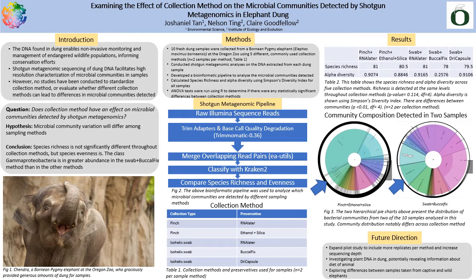As well as logging activity. A total of 10 fresh dung samples were collected from Chandra using five different commonly used collection methods, with two samples for each method. I then conducted shotgun metagenomic analyses on these samples and developed a bioinformatic pipeline to analyze the microbial communities detected, which is described in Figure 2. Species richness and alpha diversity, using Simpson's diversity index, were calculated for all samples, and ANOVA tests were run on R.